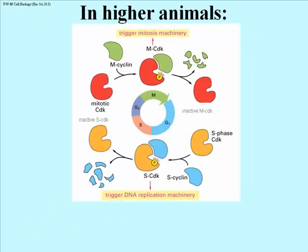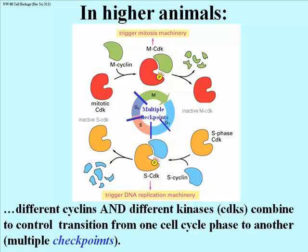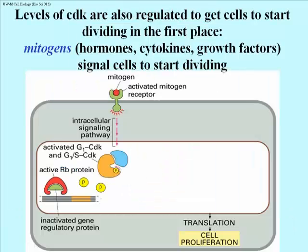Here is an illustration of cell cycle control in higher animals. We see S phase and M phase CDKs as well as S and M cyclins. We now know that there are even more checkpoints controlled by different cyclin and CDK combinations. This illustration emphasizes that cells are not always dividing, but that they can be stimulated to do so. Signal molecules that can induce cell division are called mitogens, and include hormones, growth factors, and cytokines.